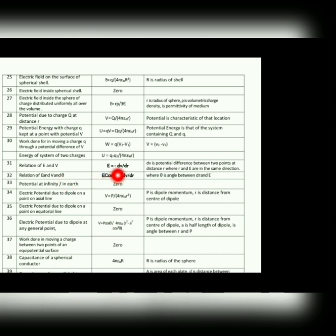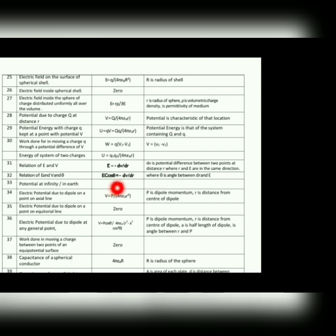Relation of electric field and potential: E = −dV/dr. Next, relation of electric field, electric potential, and theta: the basic formula was E·dr = potential difference, from which dV/dr = −E cosθ. The cosθ arises from the dot product of electric field and displacement dr.